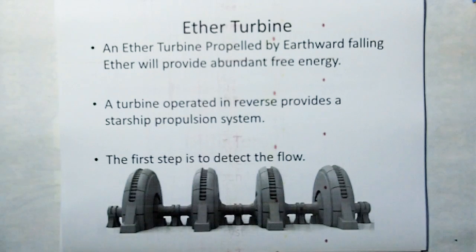A turbine operated in reverse will provide a starship propulsion system. The first step in this whole project is to first detect the flow of ether falling earthward. This is going to be the sanity check.